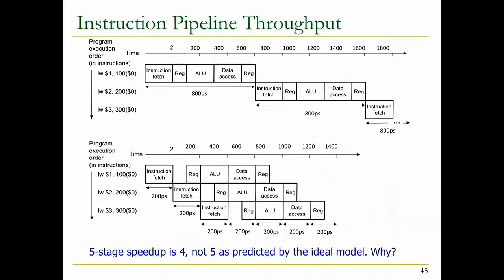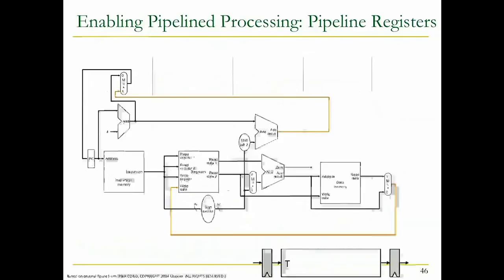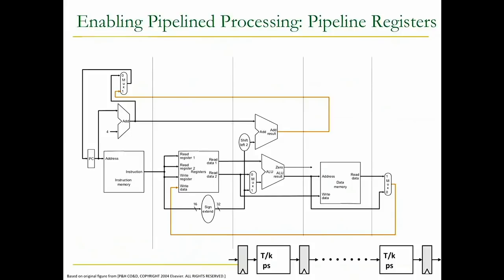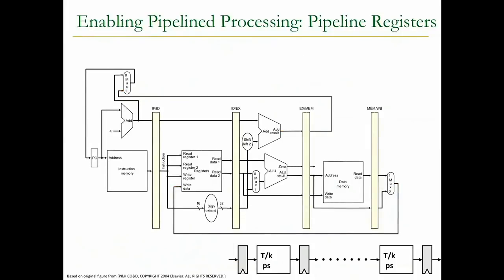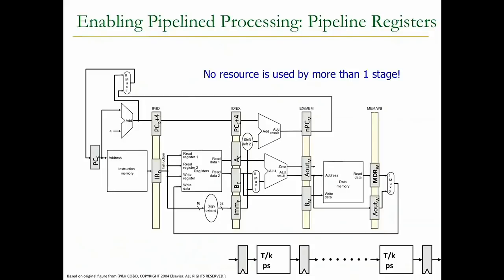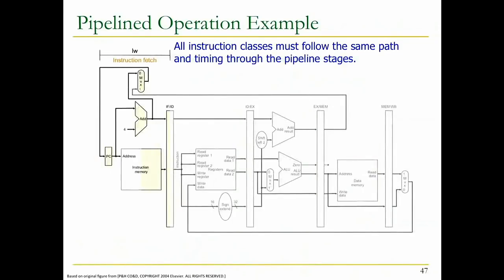This is a really ideal example - it doesn't even include the latch overheads. We need to add pipeline registers. To take the single cycle architecture and pipeline it, we need to add pipeline registers at the end of each stage. We need to put the instruction register and PC+4 here, plus all the other things we read - from the register file, the immediate, other things, the data read from memory, and the ALU's output - so that we can write it back. No resources are used by more than one stage, but there will be loops to handle carefully.